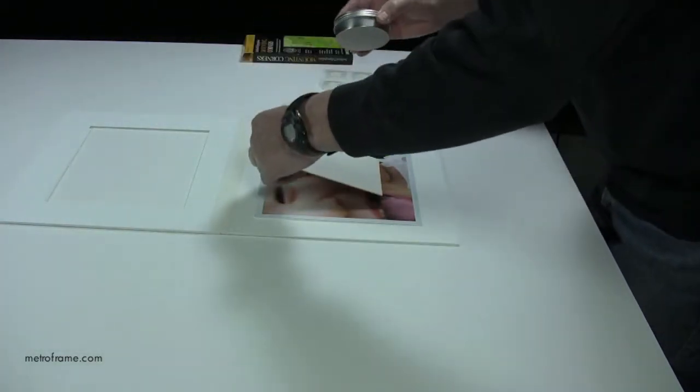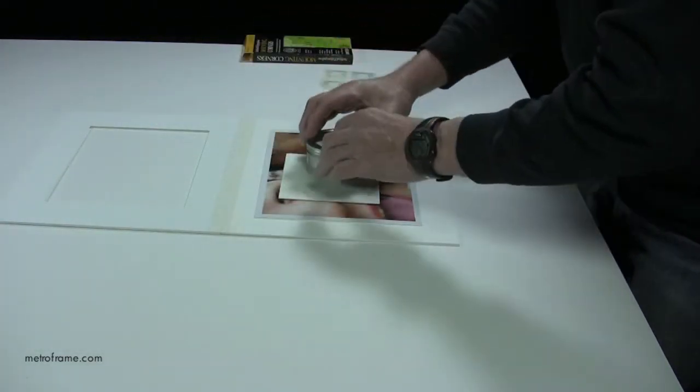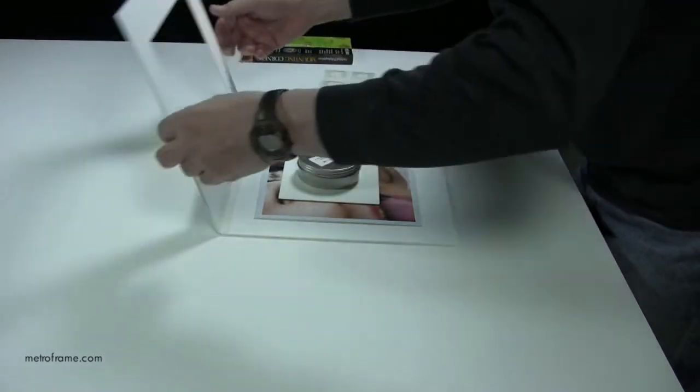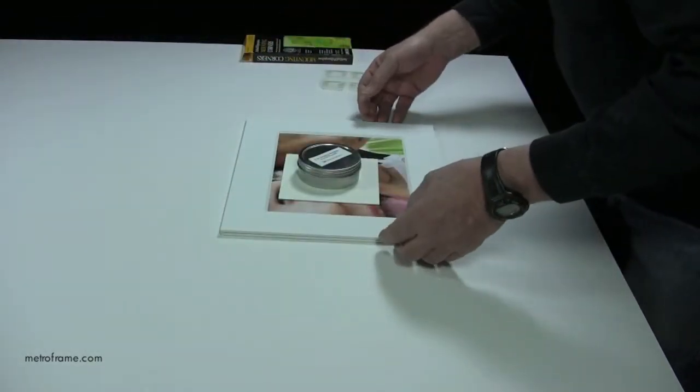We then place a mat board scrap on the photo and place a weight on top of it so the photo will not move when we attach the hinges to the backing board.